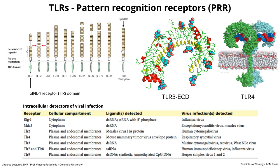Some of these TLRs are important for detecting virus infection. TLR2, for example, detects the HA protein of measles — some TLRs detect proteins, some detect nucleic acids like DNA and RNA for different viruses. We call these pattern recognition receptors, and they recognize pathogen-associated molecular patterns, or PAMPs. RIG-I and MDA5 are not plasma membrane proteins but cytoplasmic helicases involved in nucleic acid sensing. These are all sensors of the innate immune system that detect something foreign — protein or nucleic acid — and the cell responds.